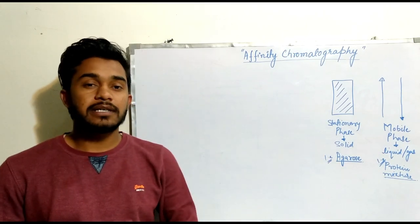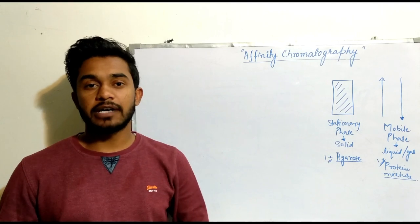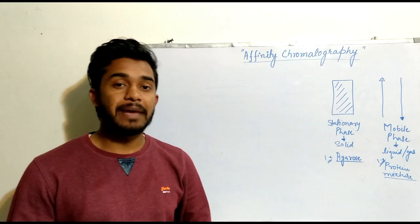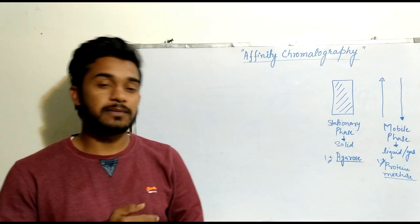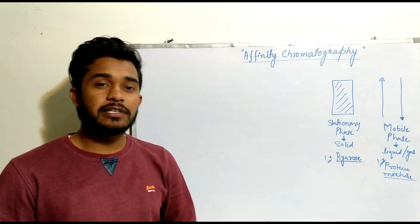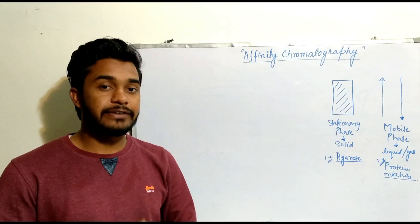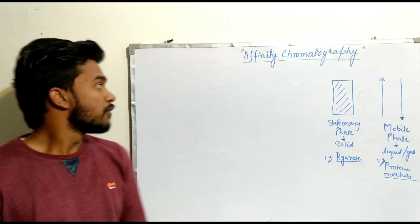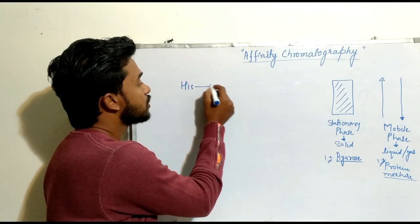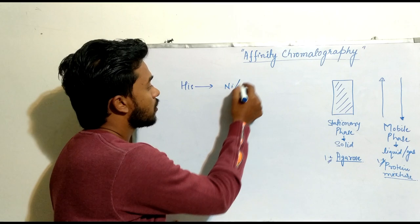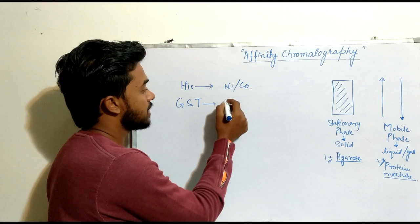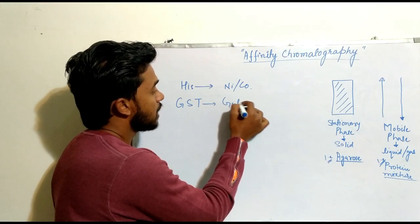Affinity Chromatography is a method used to separate different kinds of proteins from a mixture. It is also used in immunochromatography techniques to diagnose diseased persons. Affinity Chromatography is based on affinity interactions between molecules — for example, histidine shows affinity towards nickel or cobalt, and glutathione transferase shows affinity towards glutathione.